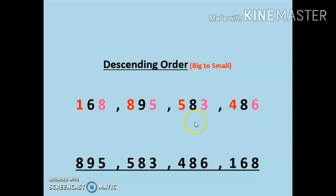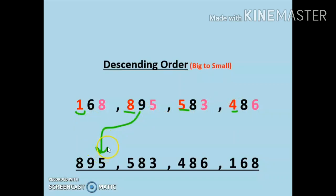168, 895, 583, 486 — we have to arrange these numbers in descending order. The first rule is that we have to count the number of digits: three digits, three digits, three digits, three digits. Since the number of digits are the same, now we have to look at the number at the hundreds place: 1, 8, 5, and 4. Clearly 8 is the biggest, so we will write 895 in the first place and put a small cross mark on top.